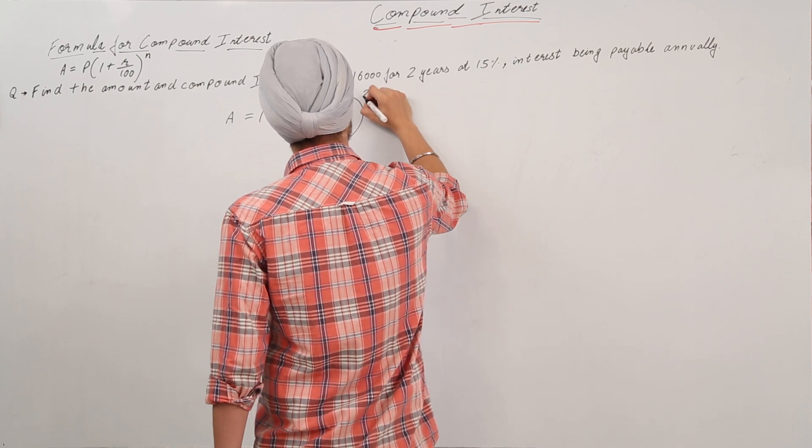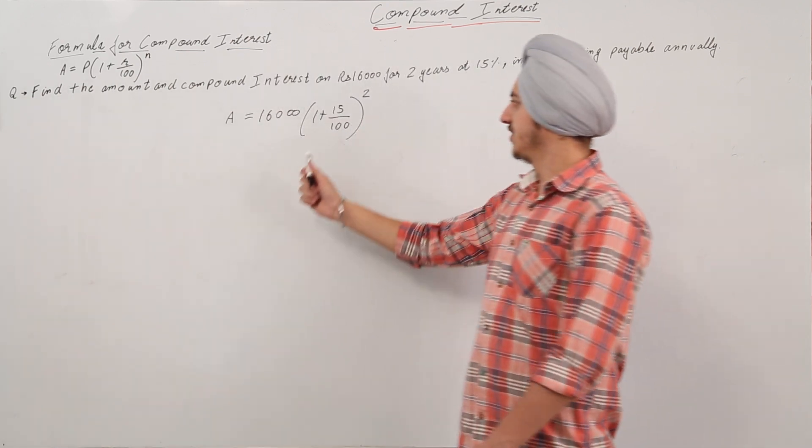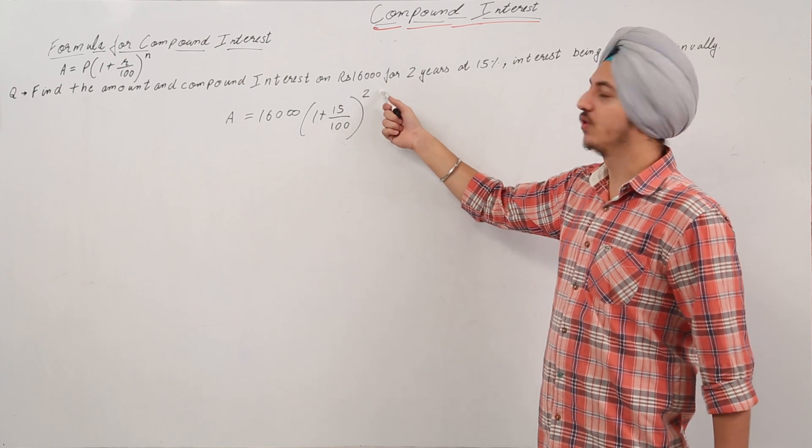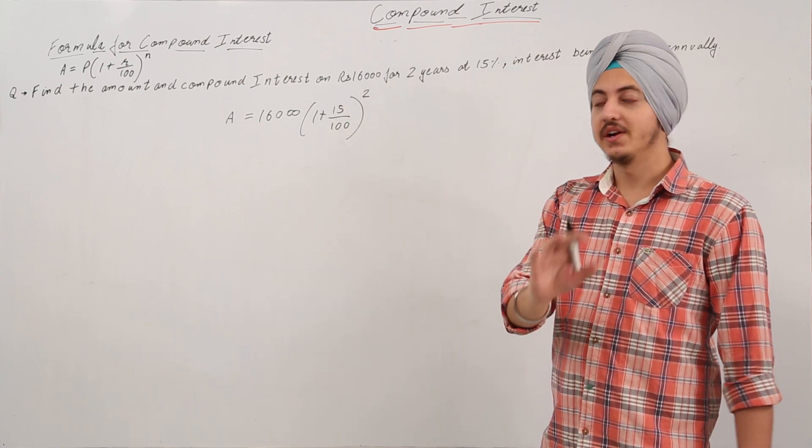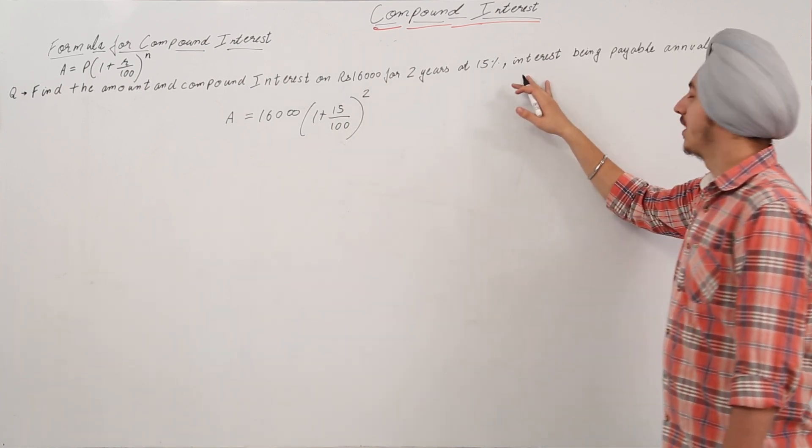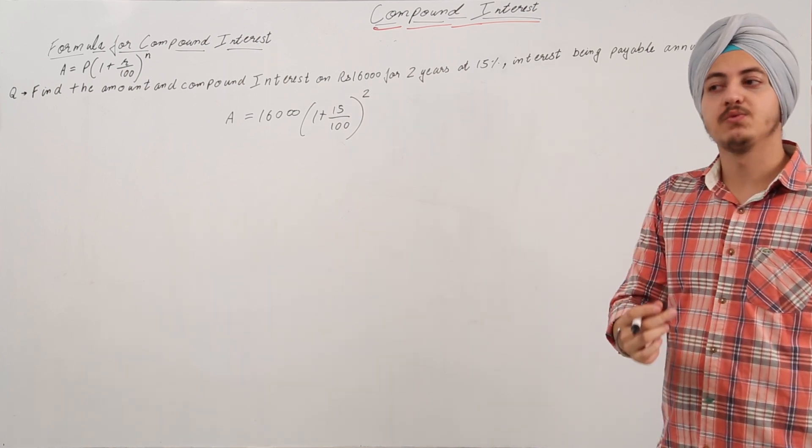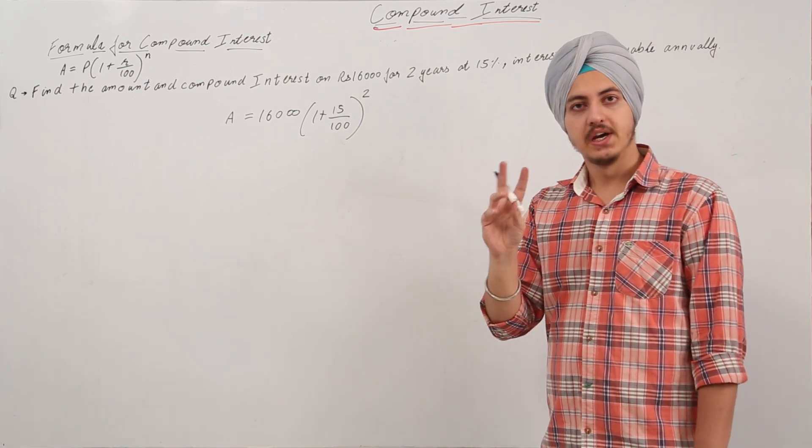Now why did we take the interest equal to 15% and the time equal to two years? Because the interest is being compounded annually, which means we have one conversion period in one year.